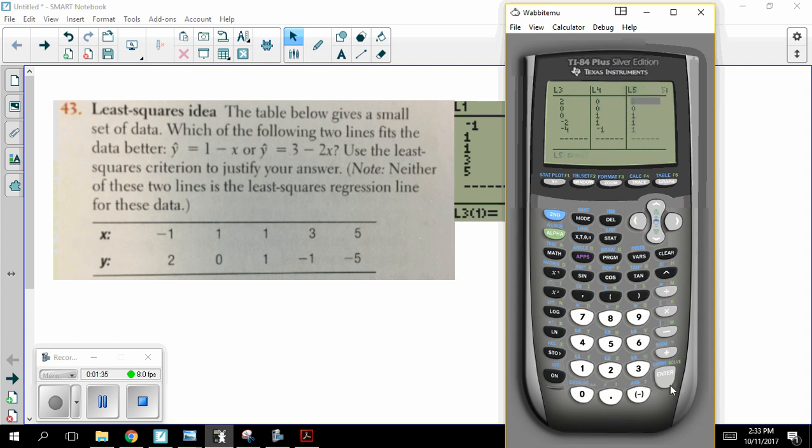There it is. And I could sum these up or I can just use my superhuman brain and see that those sum up to three. So the sum of the squares of the residuals for this first line is three.